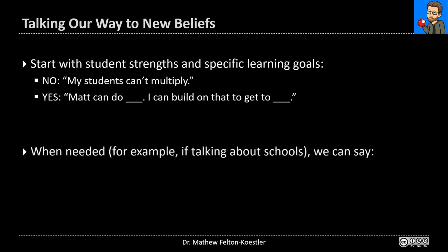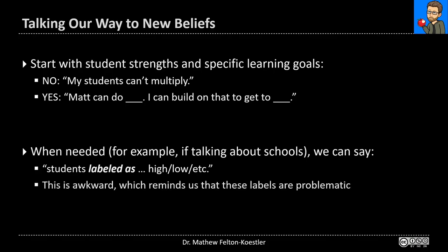Another thing is that we will have to talk about schools — I've talked a lot about high and low classes and tracks in this talk, for instance. So we want to practice language like 'students who are labeled as high or low.' It's a little awkward and it takes some getting used to, but that's good. It should be awkward, because part of what the awkwardness does is remind us that these labels are problematic — they're an artifact of a problematic system — and so we want to keep questioning that.